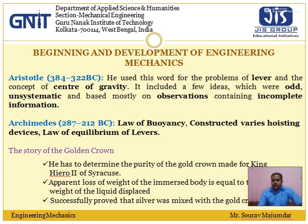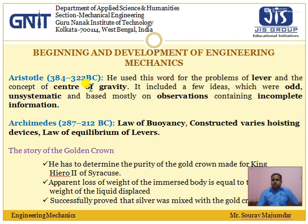In the study of ancient civilizations of Roman, Egyptian, and Babylonian cultures, there was huge use of water wheels and windmills. We can say the word 'engineering mechanics' was first used by the great scientist Aristotle, around 384 to 322 BC. He first used this term for the problem of the lever and the concept of centre of gravity, though at that time his ideas were odd, unsystematic, and based mostly on observation with incomplete information.